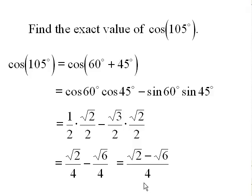It's always a good consistency check: cosine is negative in quadrant 2, and that's where 105 degrees lives. We did end up with a negative number, because √2 is less than √6, so the difference is negative — which is consistent with what the value should be.